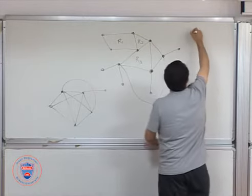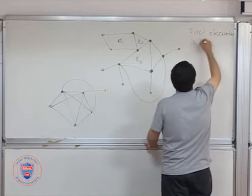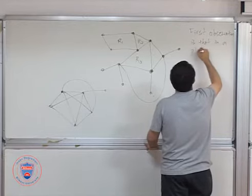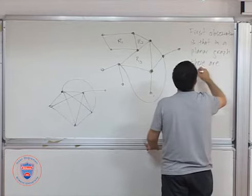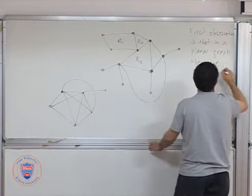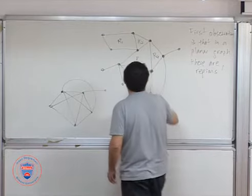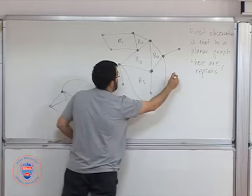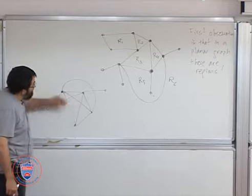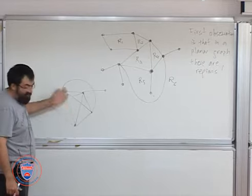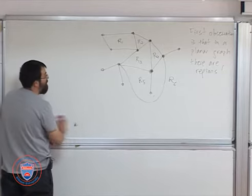So first observation is that in a planar graph, there are regions. Now if you mark these regions R4, R5, you see also that this outside completely is another region. So here you have six regions. In an arbitrary graph, we can't talk about regions because there's all these other cuts. So this is something that only happens with planar graphs.